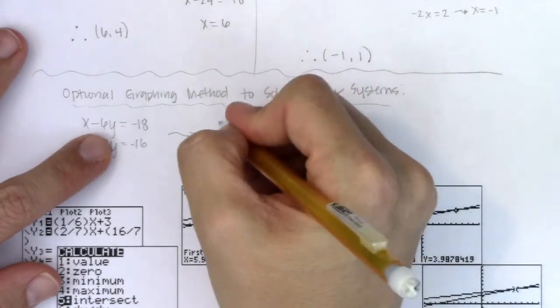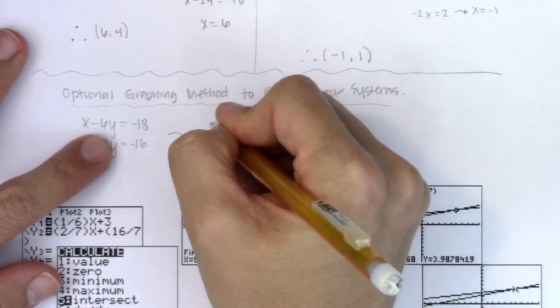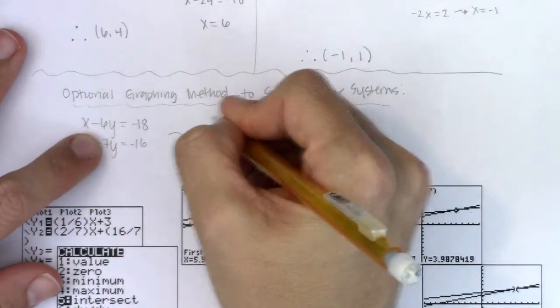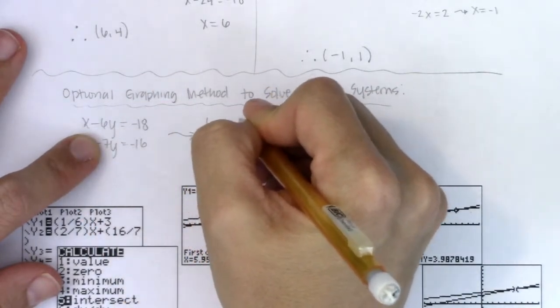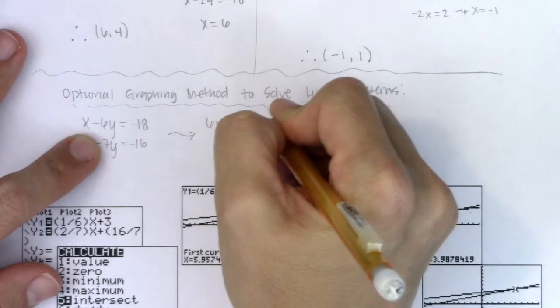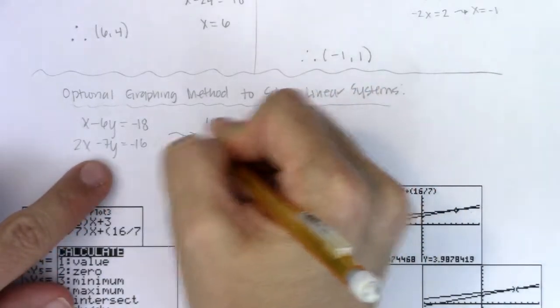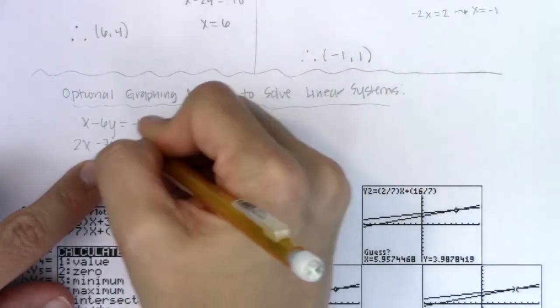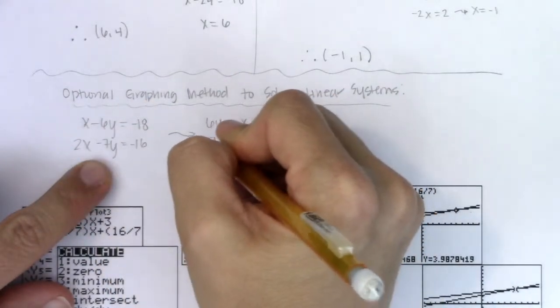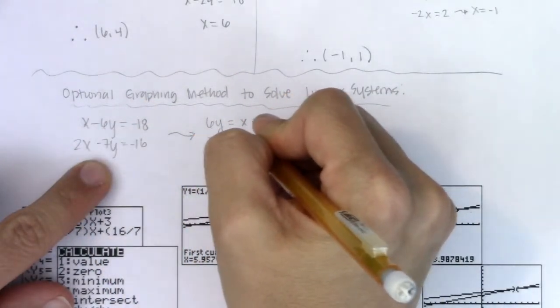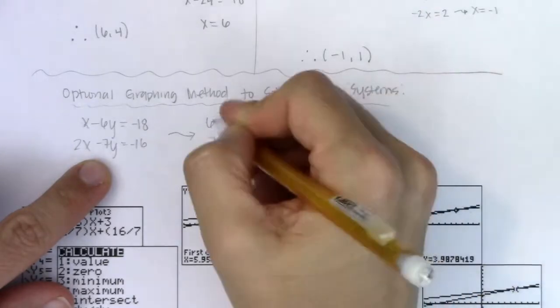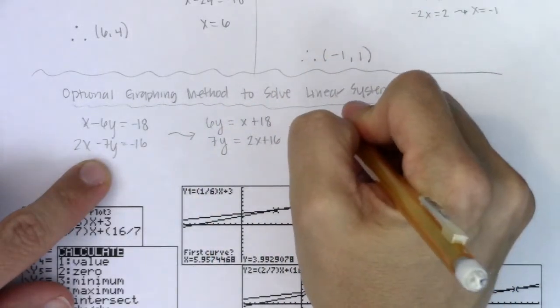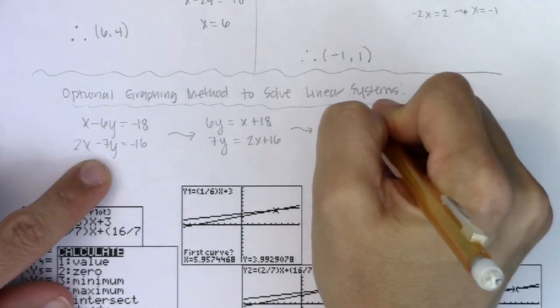And if I put this one into slope-intercept form, let's just work this a little. If I move the 6y over and the 18 over, I'm looking at 6y will be equal to x plus 18. Alright. If I start to solve for y here, I have a negative 7y. I'm going to add this to that side, move the 16 over. I think I'm looking at 7y equaling 2x plus 16. Let me divide the coefficient. So I will get y is equal to 1 sixth x plus 3.